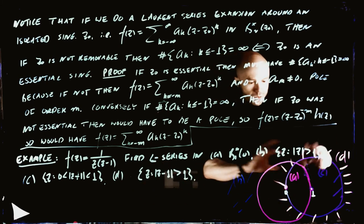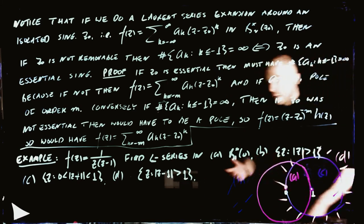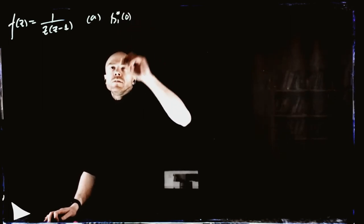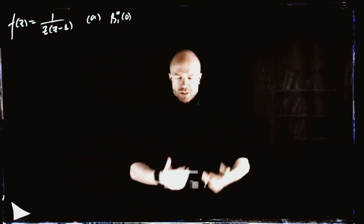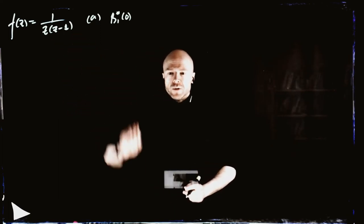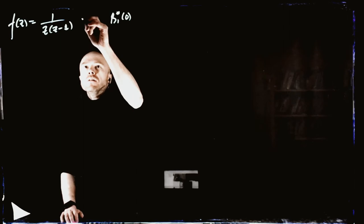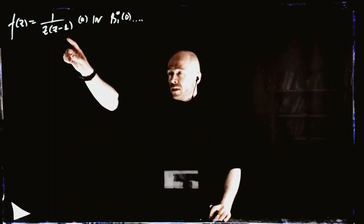We should expect four different Laurent series a priori — same function, but different coefficients in each domain. We won't compute coefficients directly; instead we'll use algebraic tricks involving geometric series. Any series you come up with that's valid inside the domain is the right one by uniqueness.